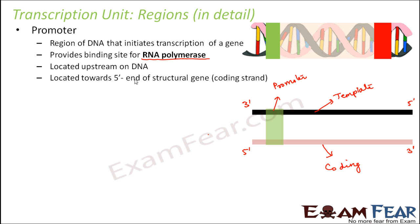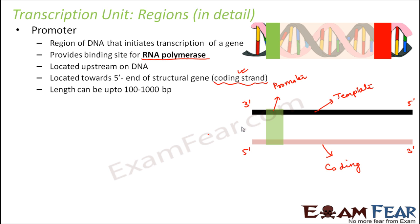The promoter is located towards the 5' end of the structural gene. Because the coding strand and template strand are antiparallel, whenever we denote which end of the transcription unit we take the coding strand as the basis. Whichever is the 5' end of the coding strand is considered the 5' end of the transcription unit. So the promoter is always located towards the 5' end of the coding strand, and the terminator will be on the other side. The length of the promoter region can be up to 100 to 1000 base pairs.